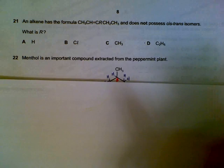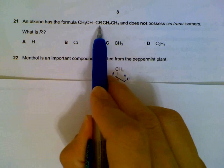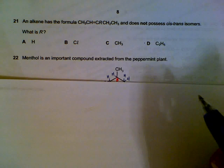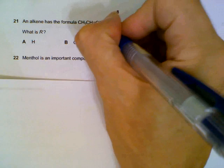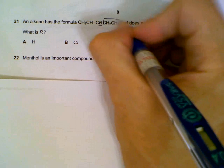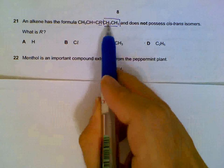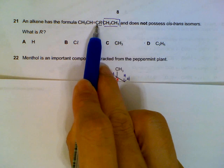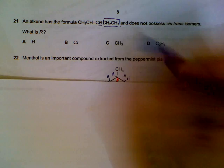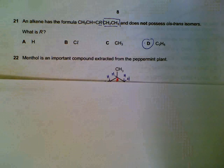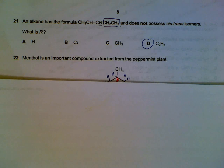We have a double bond here. And they are asking what should R be such that it does not have cis-trans? In other words, for it not to have cis-trans, your R must be the same as this group. So we will end up with 2 of the same groups connected to the same carbon at the double bond. So your R must also be CH2CH3. Then we will not have cis-trans.